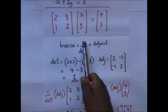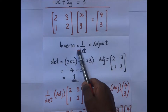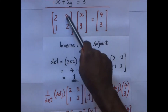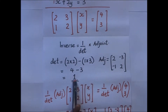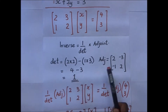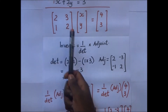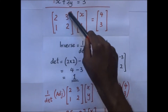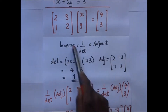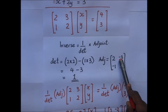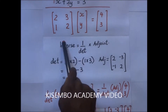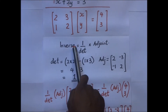The inverse of a matrix equals 1 over the determinant times the adjoint. We find the determinant: main diagonal 2 times 2 minus minor diagonal 3 times 1 gives us a determinant of 1. For the adjoint, we interchange the numbers in the main diagonal (the two 2s swap), and in the minor diagonal we multiply by negative 1: 1 × (-1) = -1 and 3 × (-1) = -3.